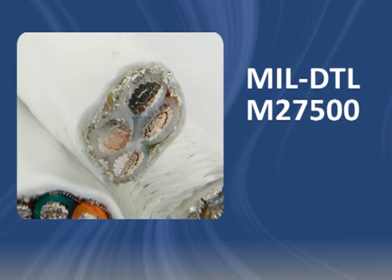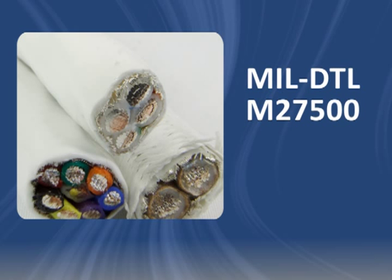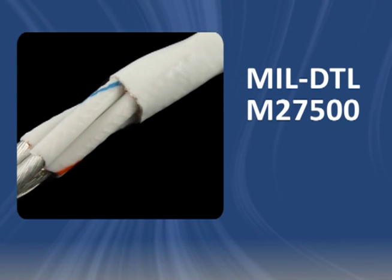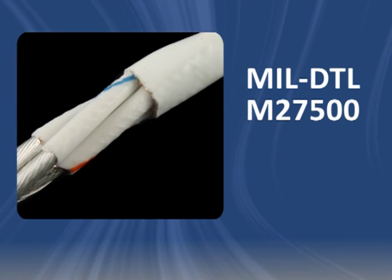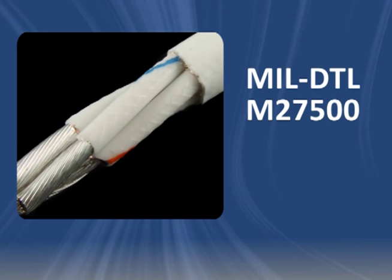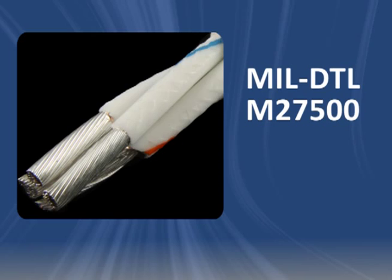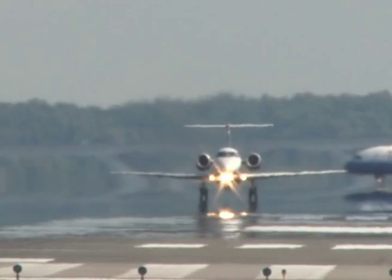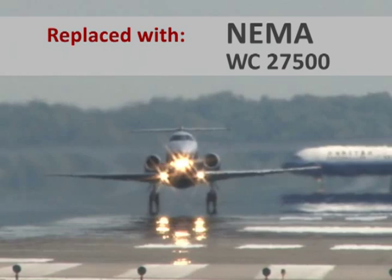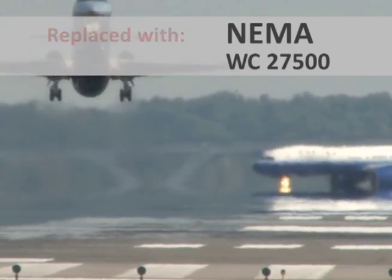M27500 cable is a popular mil-spec wire known for its use in aerospace and aircraft applications. Although many in the wire and cable industry call it M27500 cable, the MIL-DTL-27500 military specification has actually been cancelled and replaced by the non-governmental NEMA WC-27500 cable standard.